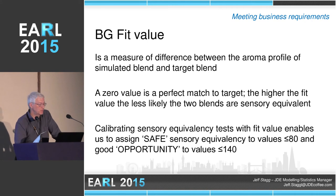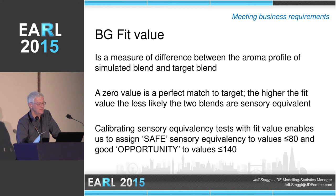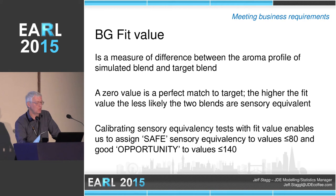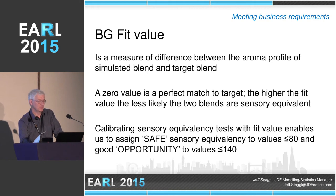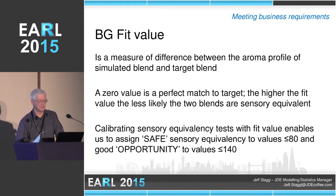The computed aroma profiles for the simulated blend are then tested for their fit versus the target. This is done by the blend generator fit value — a measure of difference of the aroma profile of the simulated blend versus the target blend. A zero value is a perfect match to the target; the higher the number, the further away and less likely it is to be sensory equivalent. We had a historical library of blends that have passed equivalency testing, and we were able to come up with a fit value that would be safe as a pass to sensory equivalency — around 80 for safe and 140 for opportunity.